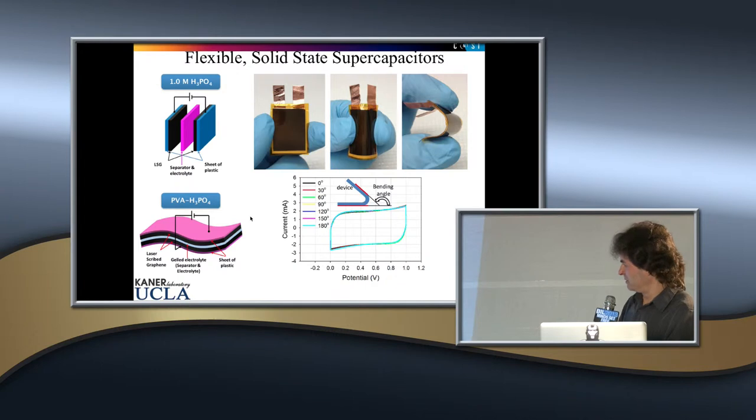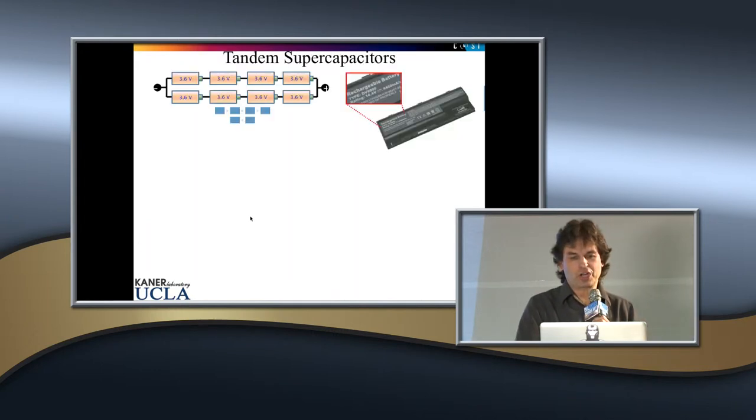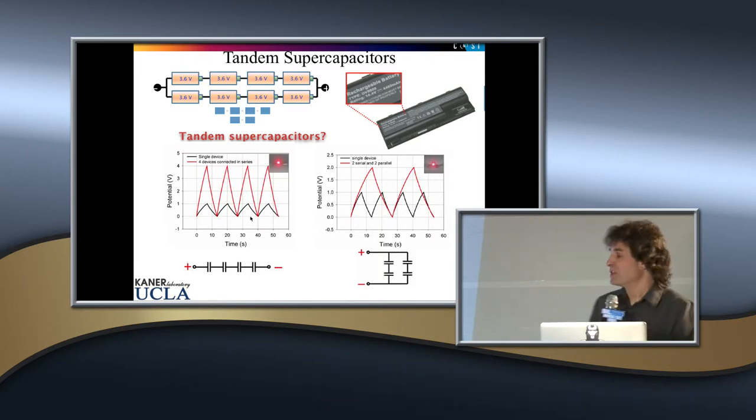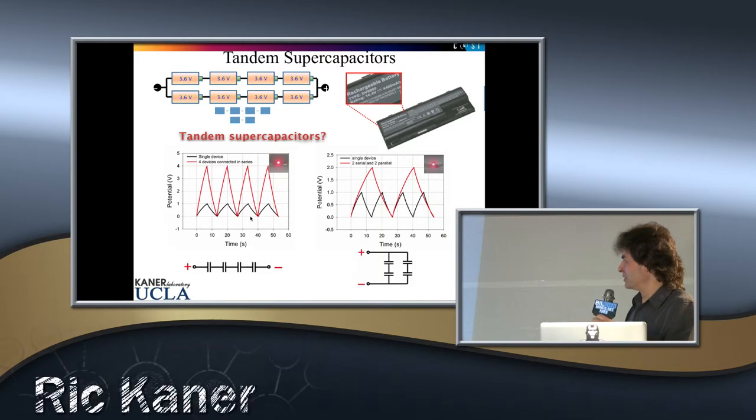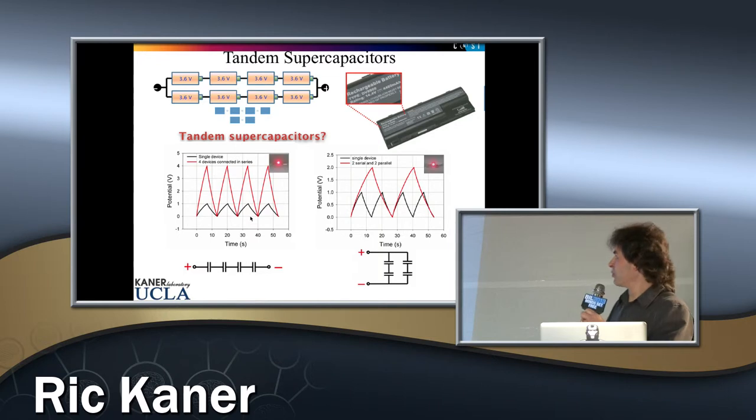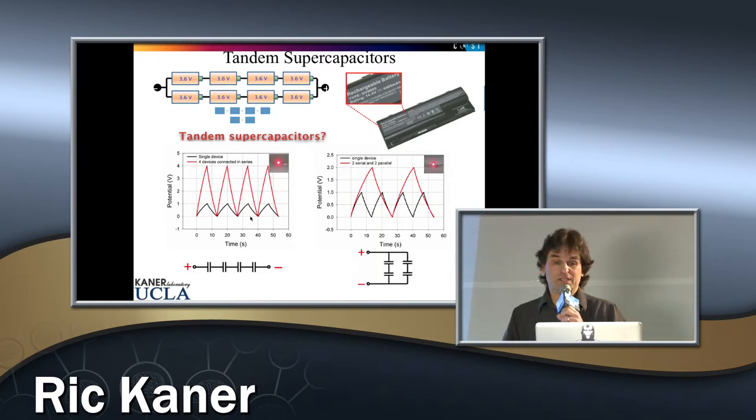It's completely flexible. Its characteristics don't change. We can put these together in series and in parallel. If we do this in water, we have a one volt cell. If we put four of them together in series, we get out four volts. If we put two in series and two in parallel, we double the voltage, we double the area under the curve. And so if you want to make something that will run your computer, you simply stack them together like you would batteries in series and parallel.